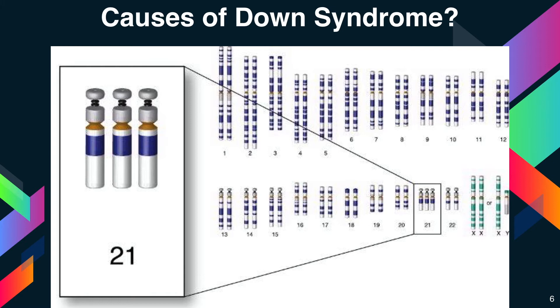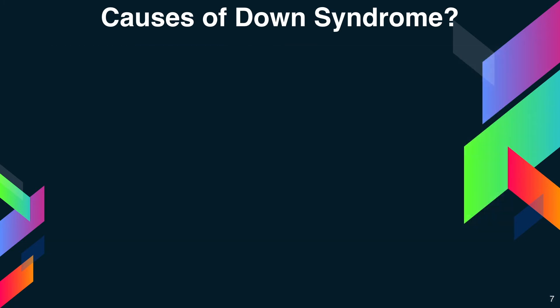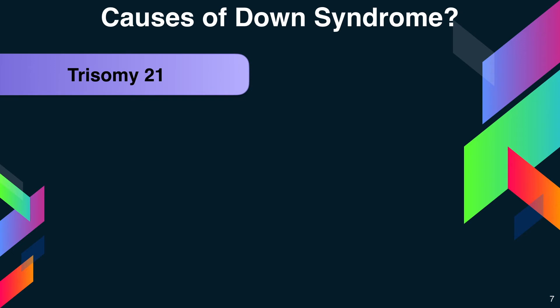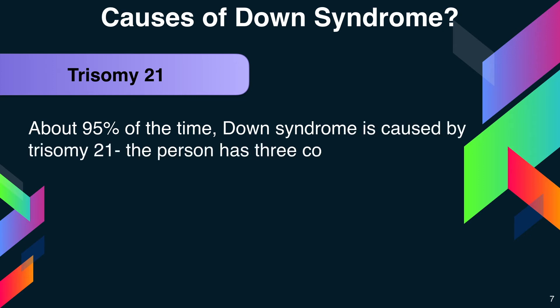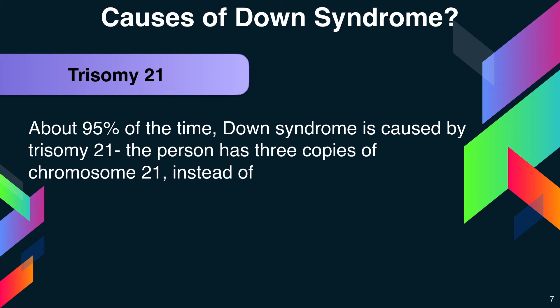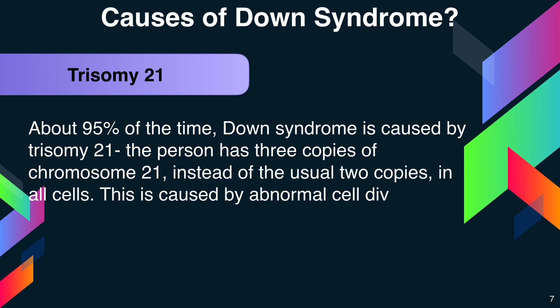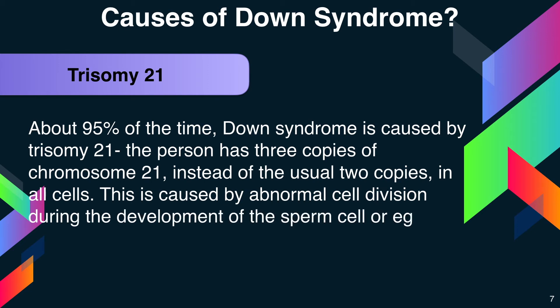Any one of three genetic variations can cause Down syndrome. The first is Trisomy 21. About 95% of the time, Down syndrome is caused by Trisomy 21, where the person has three copies of chromosome 21 instead of the usual two copies in all cells. This is caused by abnormal cell division during the development of the sperm cell or egg cell.